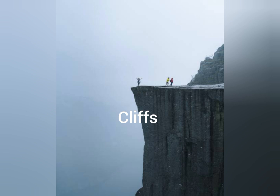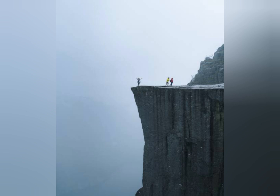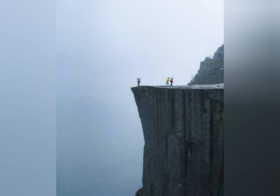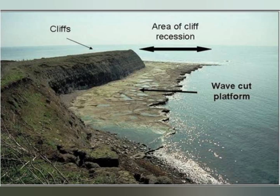Now let's talk about the landforms which are created by marine erosion. The first type of landform are cliffs. Cliffs are a very common landscape generally found in mountainous or hilly regions facing the sea. They are a huge mass of rock that stands almost vertically. Wave cutting or hydraulic action is responsible for the formation of cliffs. At the bottom of the cliff there is a very flat surface called a wave-cut platform, which is along the shoreline and is also a result of erosion by waves. It is normally visible during low tide when the sea water level decreases.